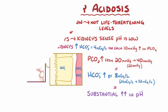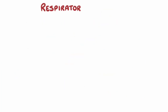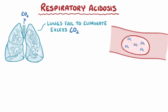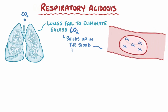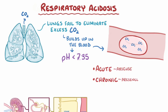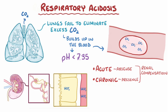As a quick recap, respiratory acidosis happens when the lungs fail to eliminate excess carbon dioxide, which builds up in the blood, causing blood pH to fall below 7.35. It's divided into an acute and a chronic phase, according to the absence or presence of renal compensation, respectively, which raises bicarbonate concentration in the blood.